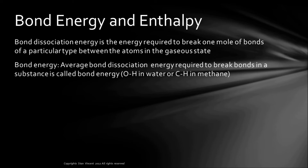Two terms: bond dissociation energy and bond energy. Bond dissociation energy is the energy required for breaking bonds, so it is endothermic. Bond energy is the energy released when one mole of bonds are formed, therefore it is exothermic. Here we consider only a single type of bond. For example, the water molecule has OH bonds. The energy released when one mole of OH bonds are formed is the bond energy of the OH bond. For methane, there are four CH bonds, and the energy released when one mole of CH bonds are formed is the bond energy. If you are breaking the bonds, it is called bond dissociation energy.